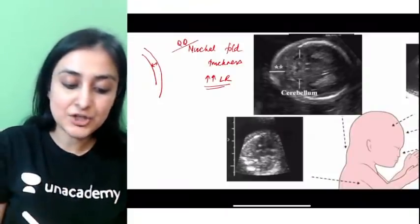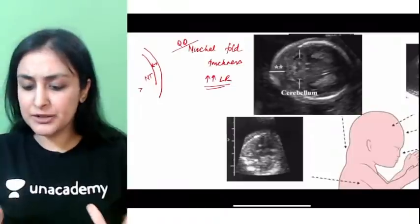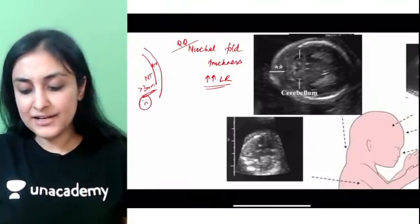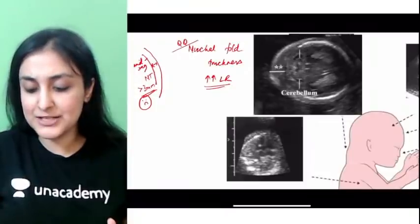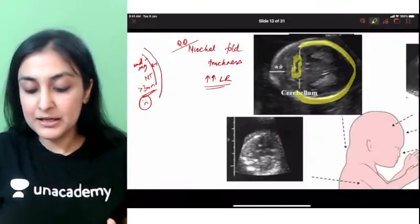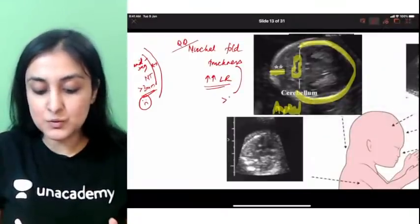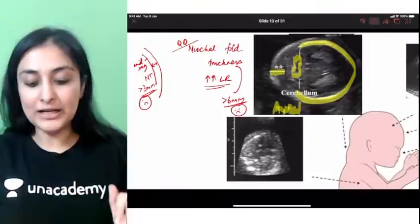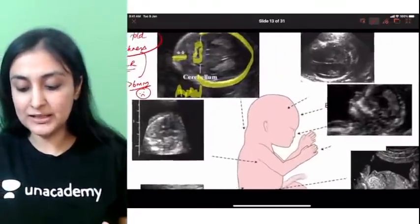NT is measured on a mid-sagittal plane; if NT is more than 3 mm, it's abnormal. For NFT in the second trimester, measured on axial section through the posterior fossa showing the cerebellum, if NFT is more than 6 mm it is abnormal. NT is the first trimester measurement; NFT is the second trimester measurement. NFT is the strongest soft marker of Down syndrome.